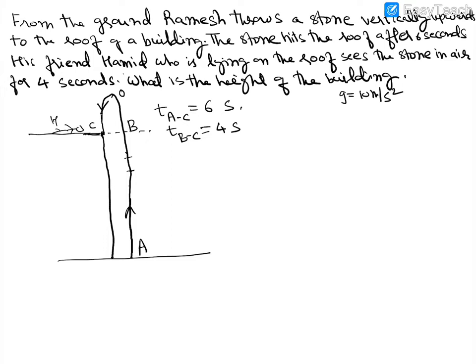Now we are asked what is the height of the building. The way to go about it is — let me ask you a question. Pause the video and answer: what is the velocity at point O? The velocity at point O is 0, because at point O this is the maximum height.